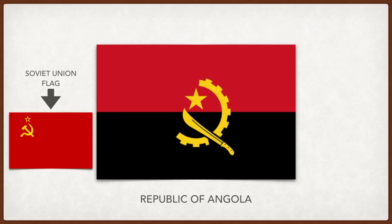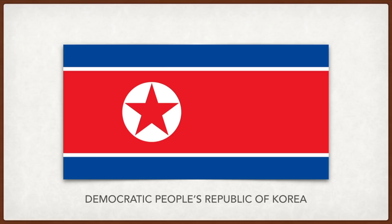North Korea: the red star is symbolic of communism, although references to communism have since been removed from North Korea's constitution. The red stripe represents revolution, the blue stripe peace, and the white purity.